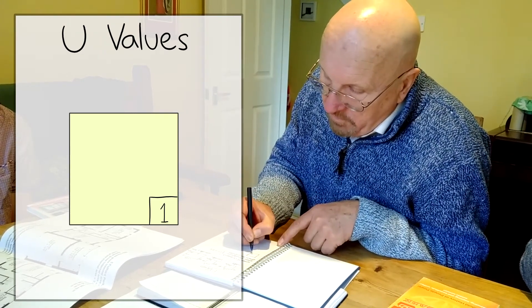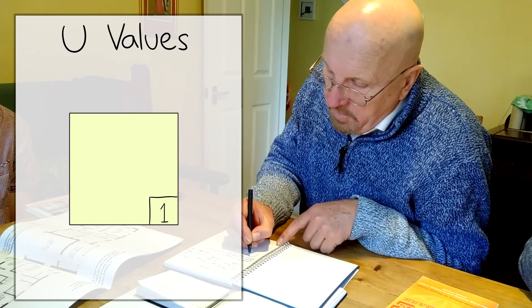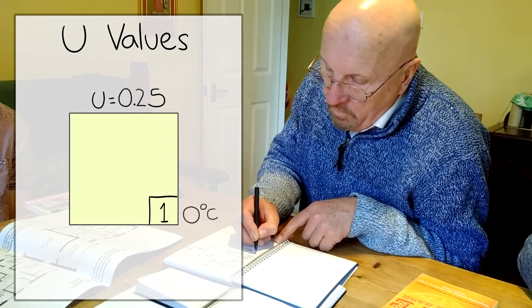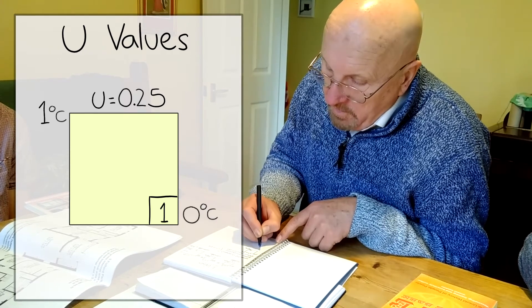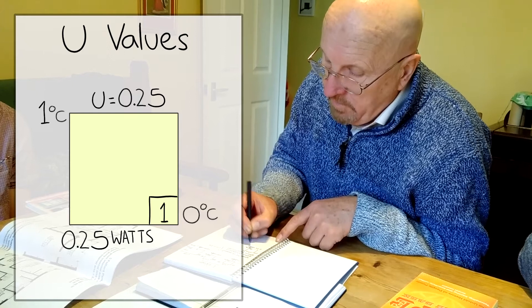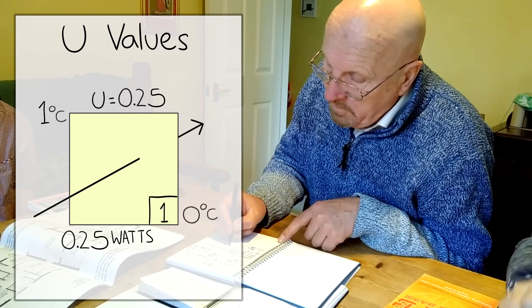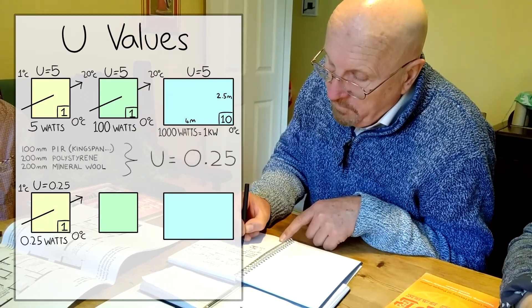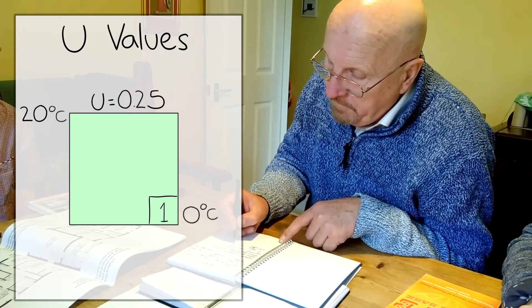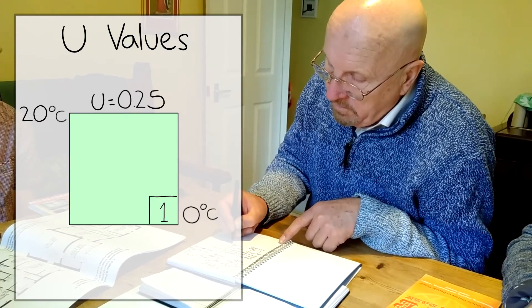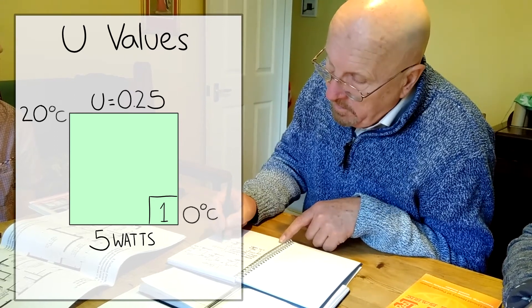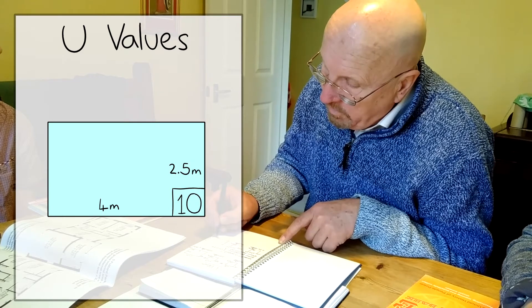So we've got one square meter. The U-value is now 0.25. 0 degrees C, 1 degrees C. This is only now 0.25 watts going through that surface all the time. If we put it up to 20 degrees C with everything else being the same. One square meter, not degrees C. We're up to only 5 watts.